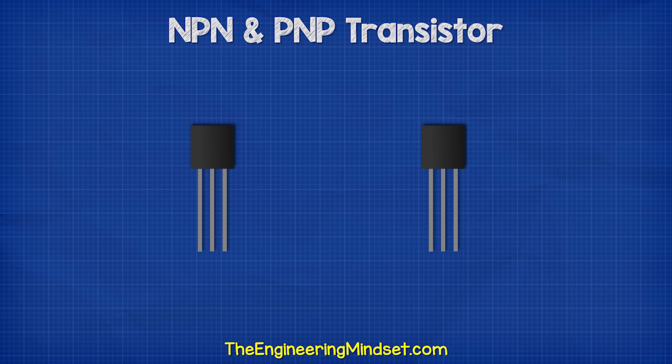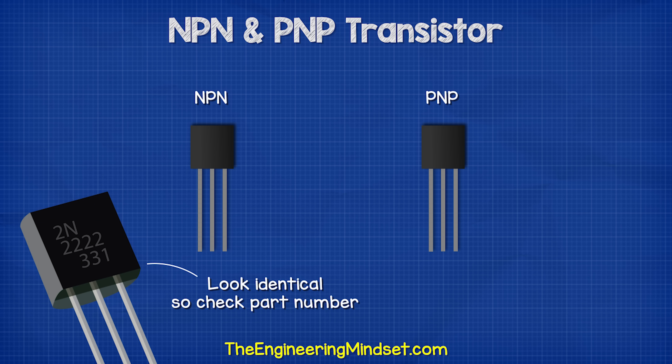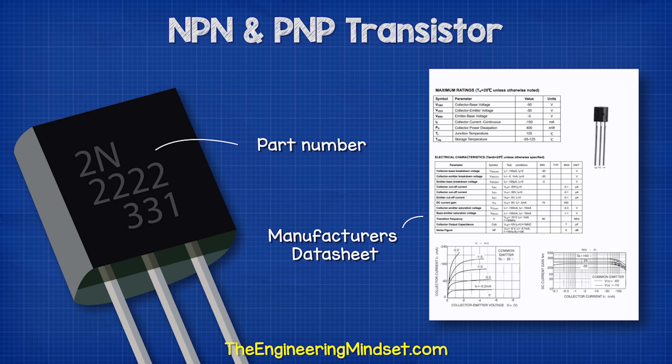We have two main types of bipolar transistors: the NPN and the PNP type. The two transistors look nearly identical, so we need to check the part number to tell which is which.